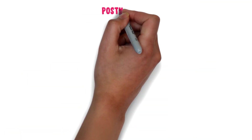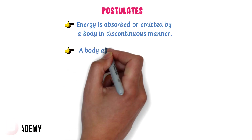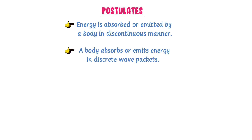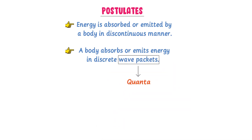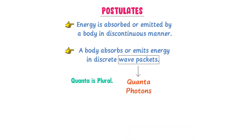Now let us understand the postulates of Planck's quantum theory. He states that energy absorbed or emitted by a body is in a discontinuous manner, not in a continuous manner. Secondly, a body absorbs or emits energy in discrete wave packets. These wave packets are called quanta, or in the case of light, they are called photons.